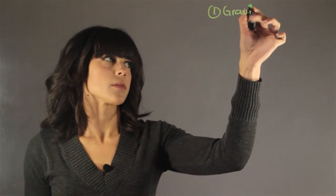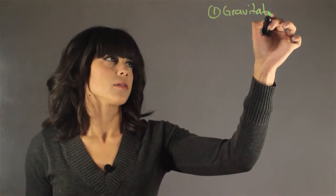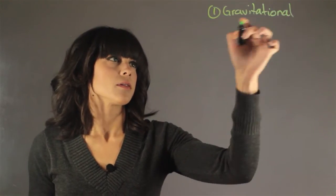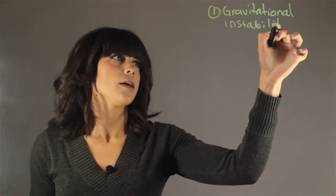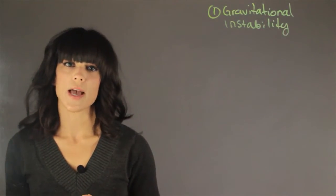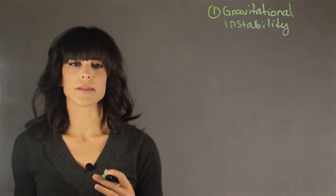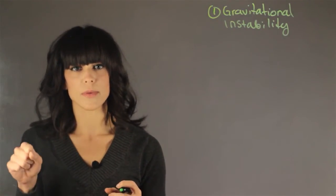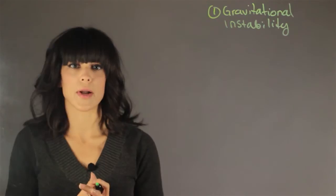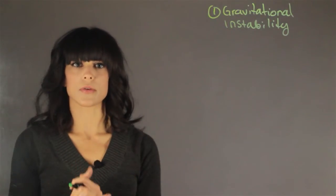So the first one that I want to talk about is gravitational instability, and this one has to do with the formation of galaxies. We theorize that galaxies are formed by these density formations and they collapse under their own gravity. So this is gravitational instability.